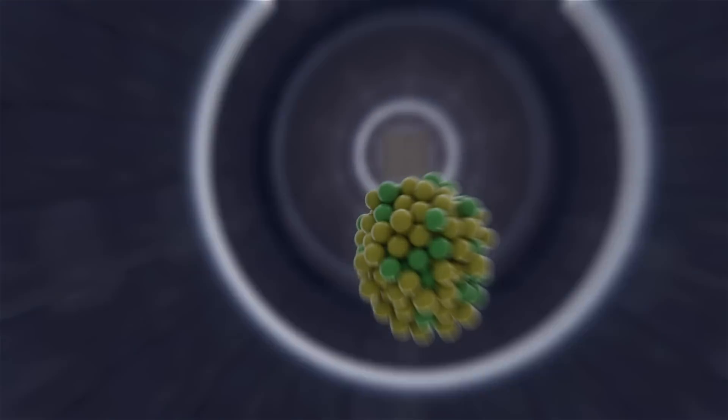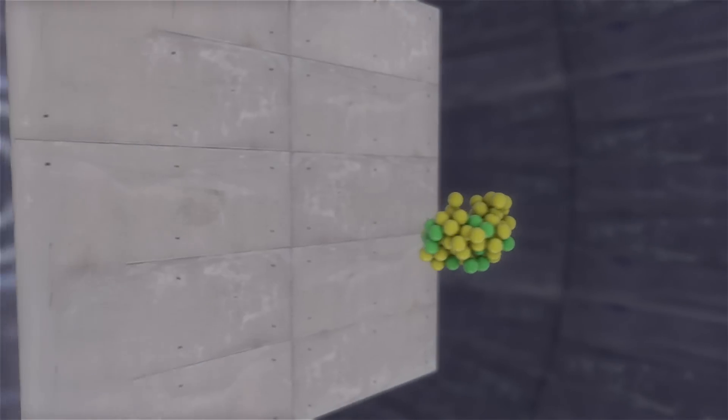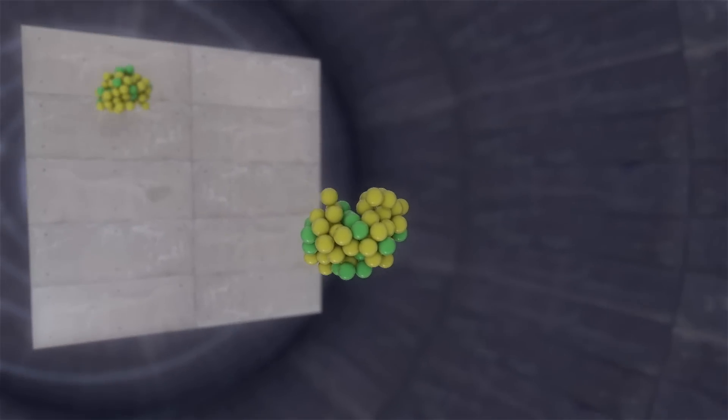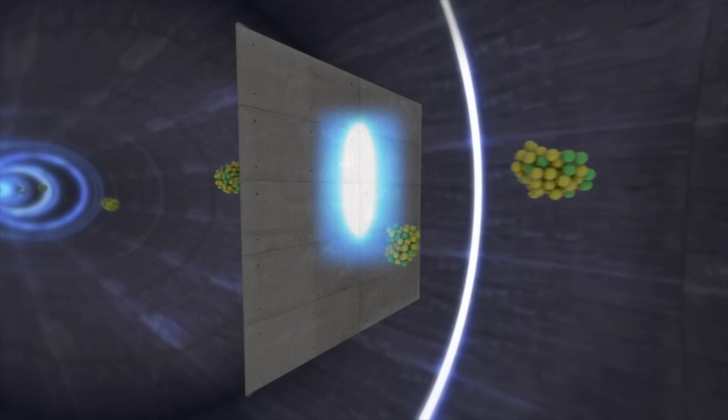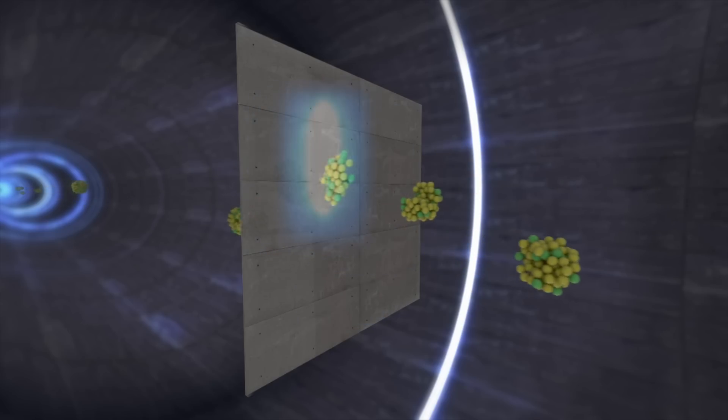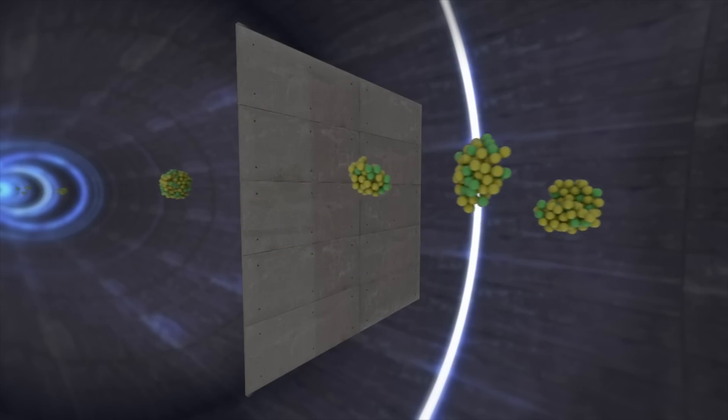As the stream of ions strikes a target, the resulting collisions cause the ions to lose or gain neutrons or protons and become unstable, thus producing thousands of different types of rare isotopes, sometimes highly unstable and existing only fractions of a second.